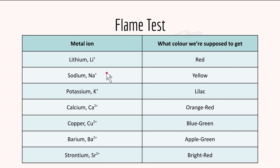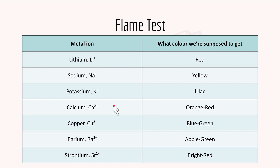For the metal ions and their flame colors: lithium ion gives red, sodium ion gives yellow, potassium ion gives lilac - just like when potassium reacts with water you get a lilac flame. Calcium gives orange-red, copper ions give blue-green, barium gives apple green, and strontium gives bright red.